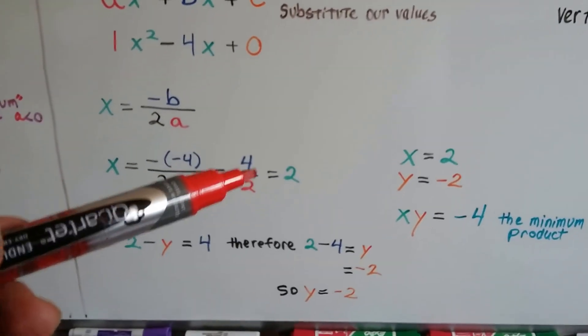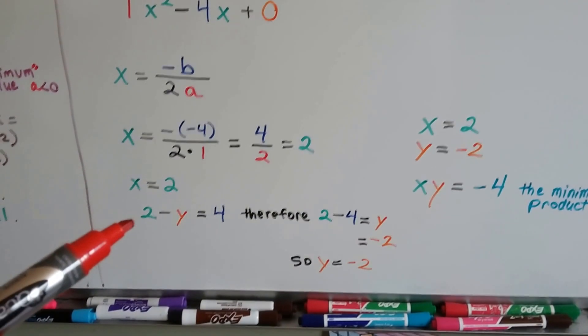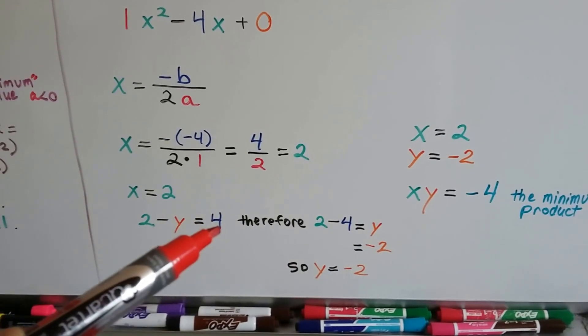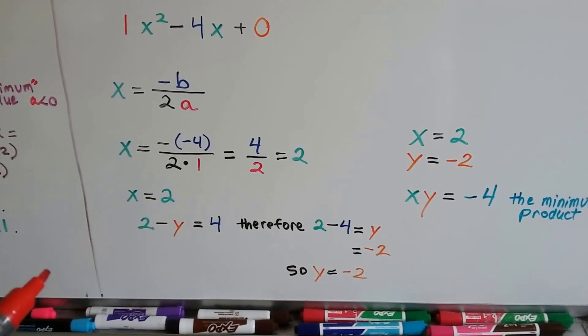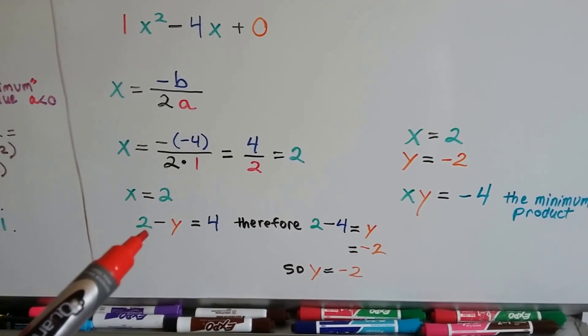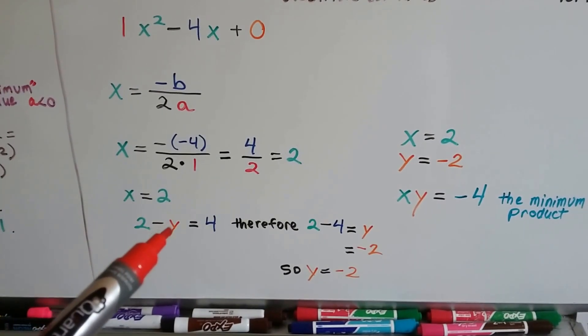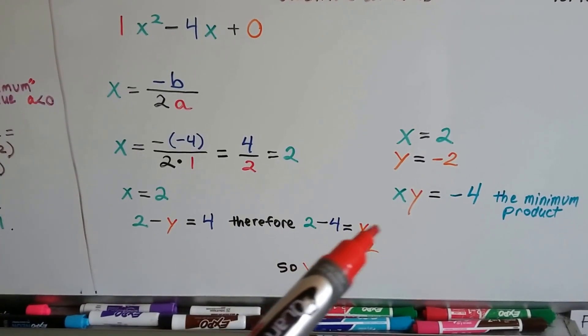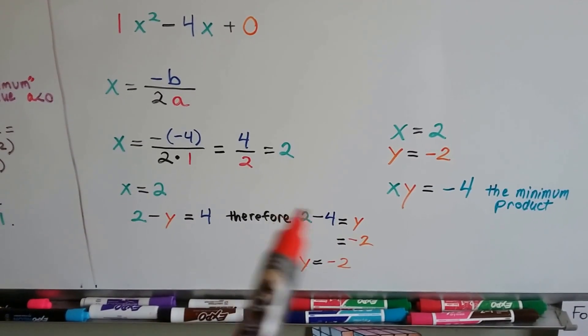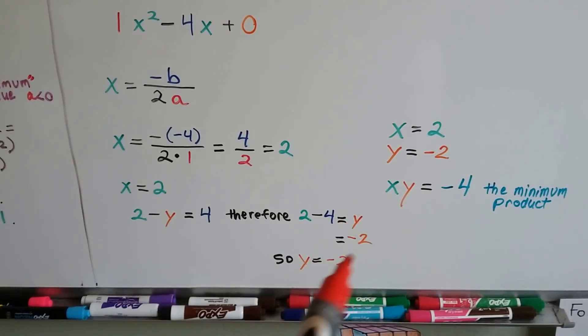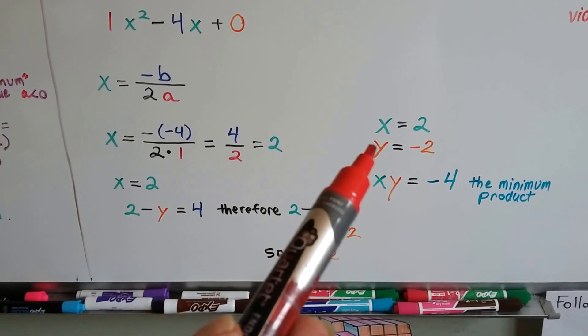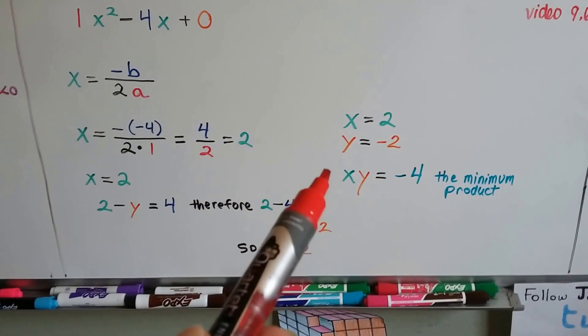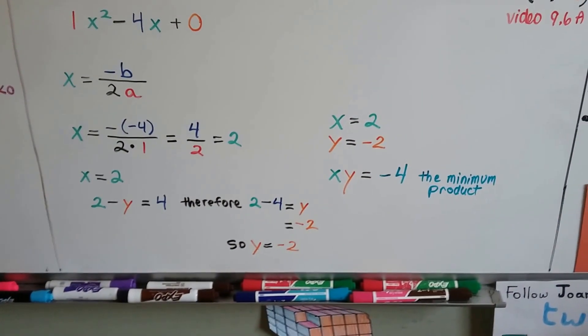If x equals 2, and we know that 2 - y equals 4 for our difference because it was x - y = 4, then 2 - y = 4. But it also means 2 - 4 = y, and 2 - 4 is -2, so y is -2. x is 2, y is -2, that's our two numbers. And x times y is -4, that's our minimum product.